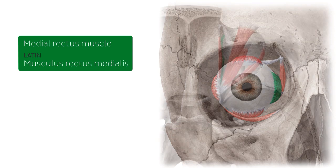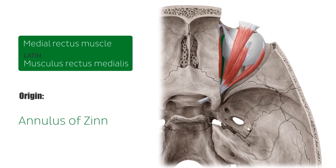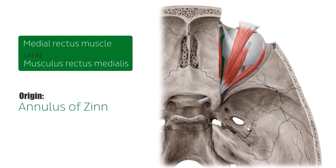The medial rectus muscle, along with the other rectus muscles, originates from the common tendinous ring, also known as the annulus of Zinn, which is located at the apex of the orbit around the optic canal.